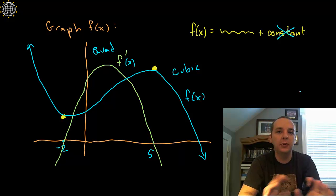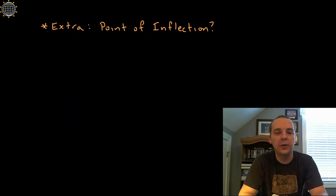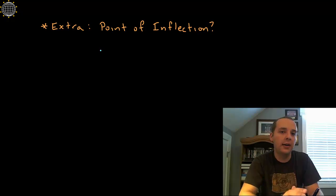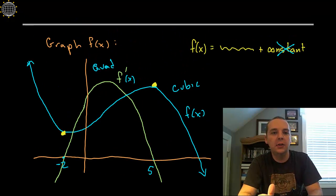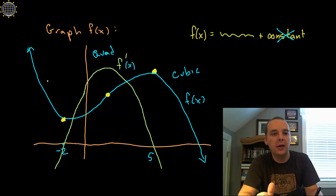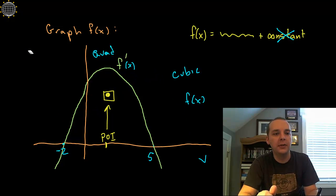That's pretty much the majority of what you would be asked. But let's hang out just for another second and ask: what would the point of inflection be, or can we tell that? If you remember, that's where a graph changes from concave up to concave down. We can look at the original function and see where it changes from concave up to concave down — right there would be a point of inflection on the original graph at that x-coordinate. But let's see if we could have revealed that from the derivative.